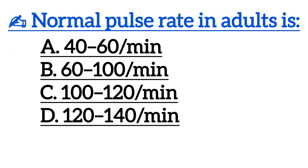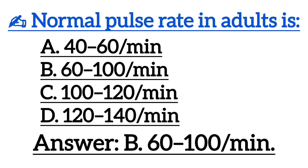Normal pulse rate in adults is — correct answer is option B: 60 to 100 beats per minute.